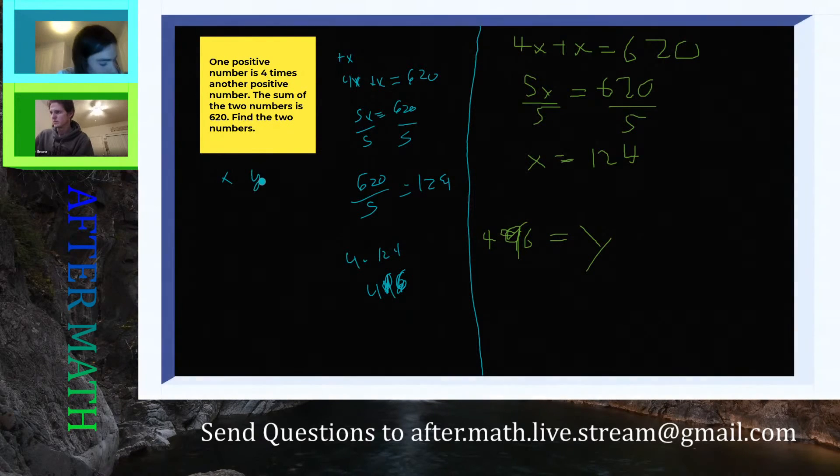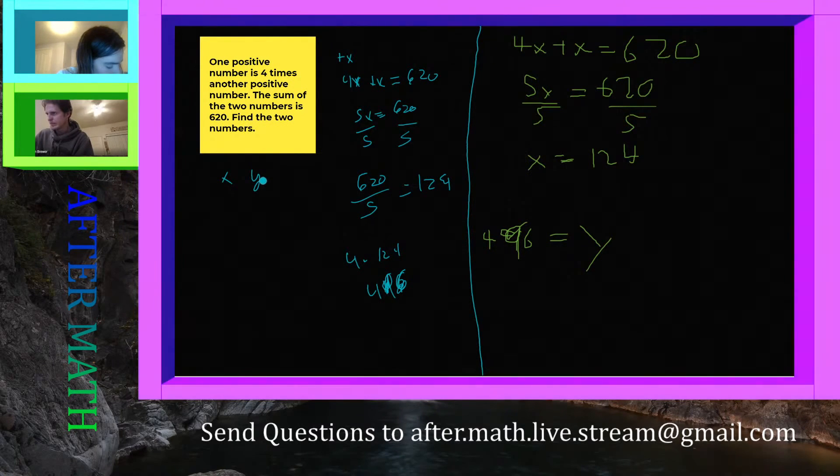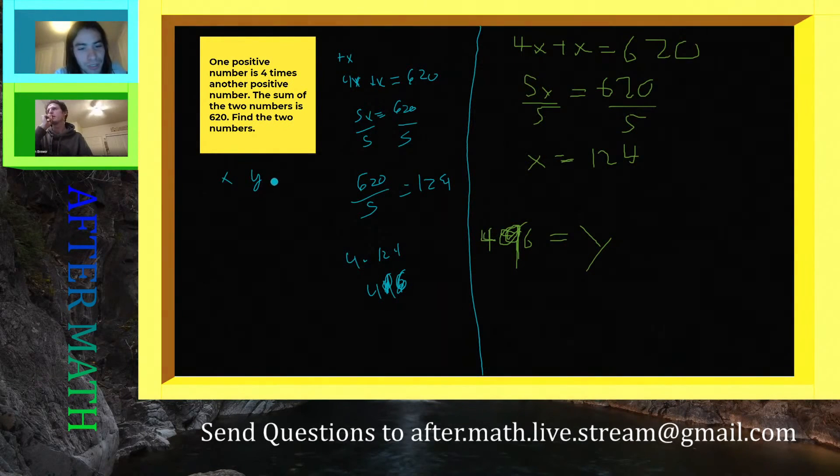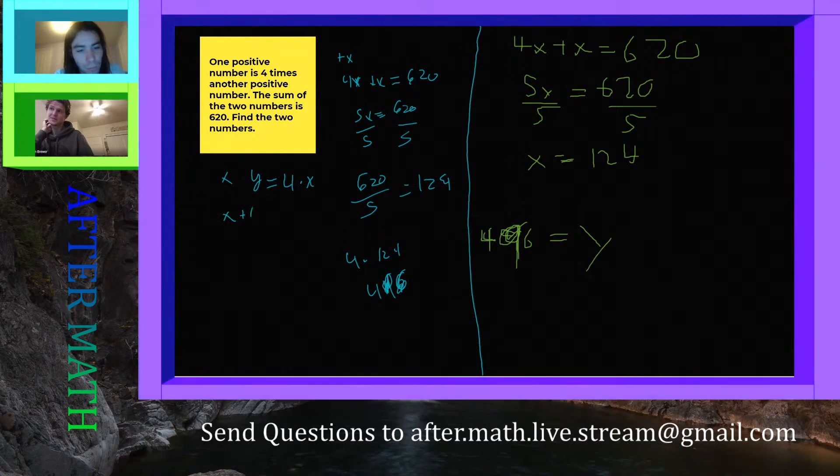How is asking 'do we divide by four or not five?' and so we're going to explain why we divided by five and not four. So we're going to say x and y are two different numbers that we have, and we're going to say y is equal to four times x. So we have x plus y, right, is equal to 620.